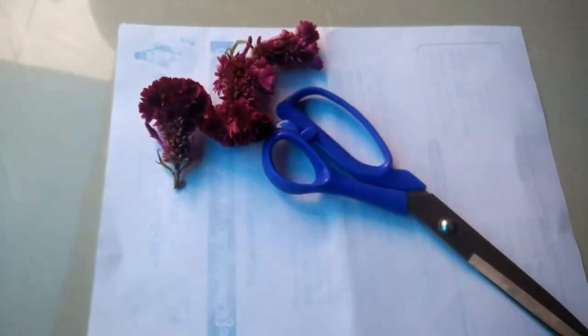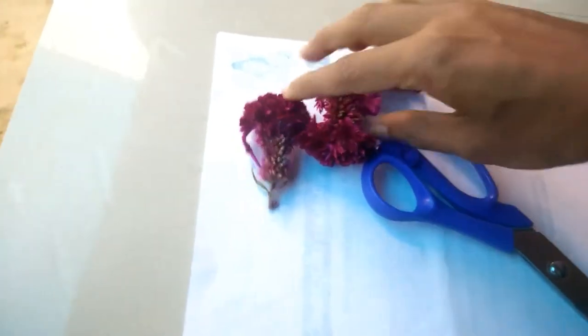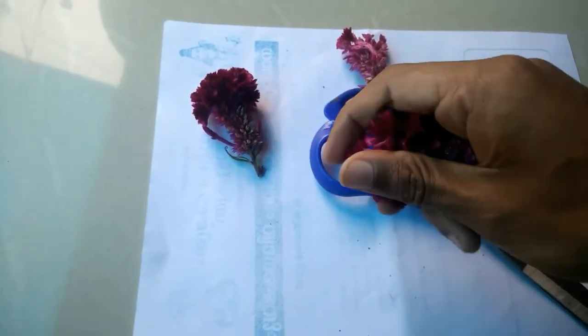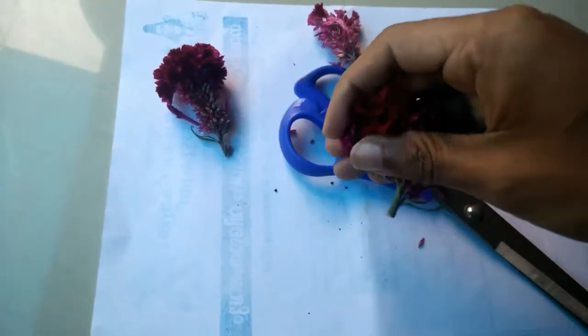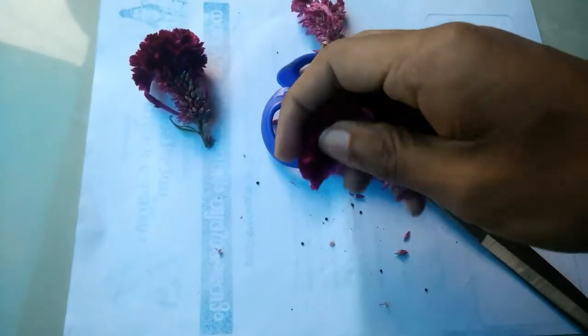As you can see, now I have taken a few flowers along with the white paper and the scissors. Now I'm separating the seeds by squeezing them with my hand. You need to apply a little bit of pressure only. No need to squeeze it harder.